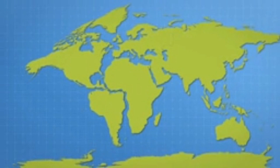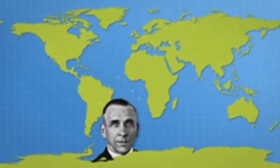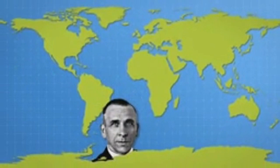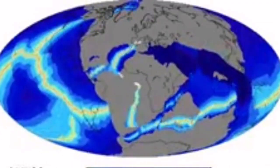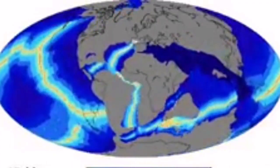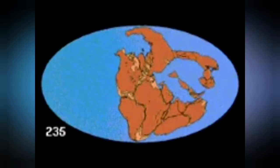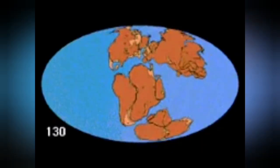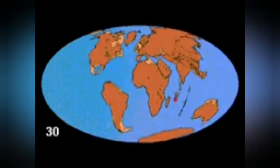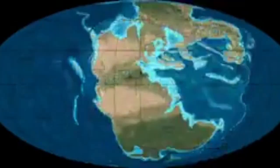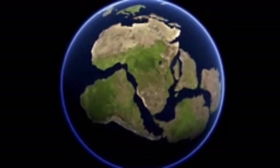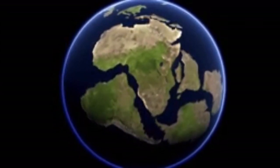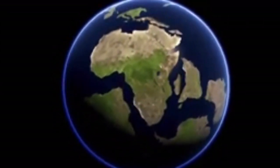First we discovered that certain coastal areas of the world — for example Africa and South America — match together as if they have been joined together in the past. Alfred Wegener discovered this first. Now we know that the earth's continents are actually not in the original place they have been; they have moved many times over since the creation of the earth four and a half billion years ago.